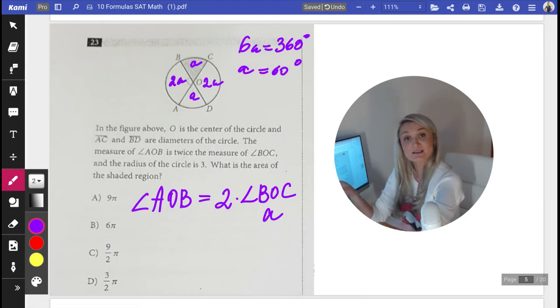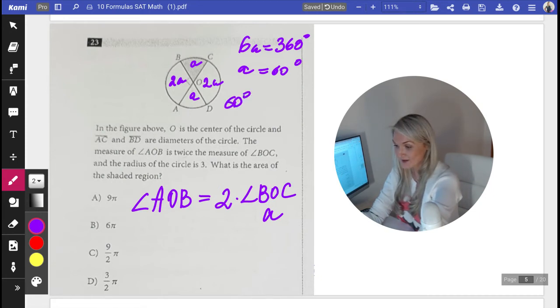Now you have everything you need to solve this problem. And now you can use the proportionality of circles formula where 60 over 360 is equal to what we need, which is the area of a sector. I'm just going to call it X over the area of a circle.